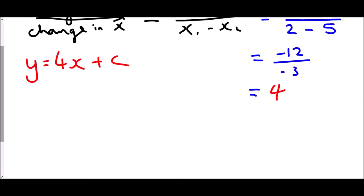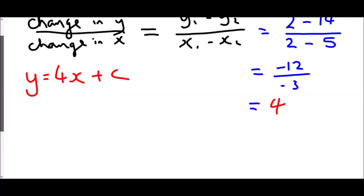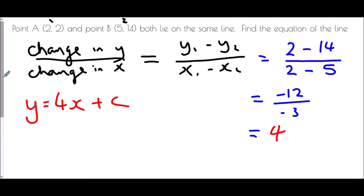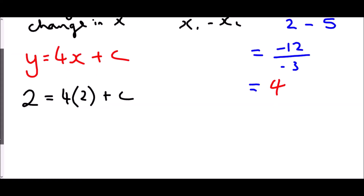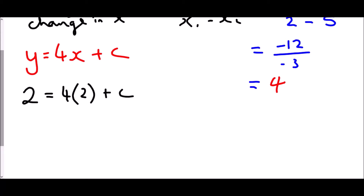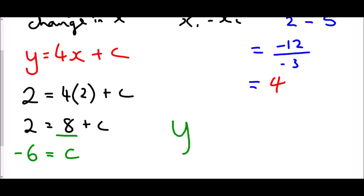To get c I use one of the two coordinates — let's use (2, 2). That means 2 equals 4 lots of 2 plus c, so 2 equals 8 plus c. Taking away 8: negative 6 equals c. The equation of the line joining those two points is y equals 4x minus 6.